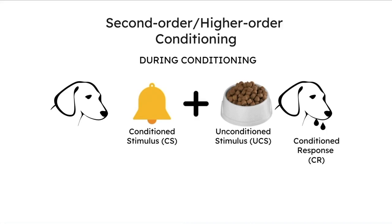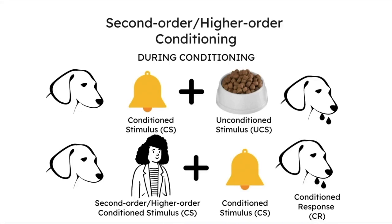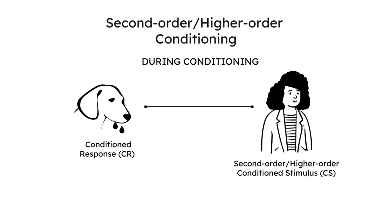Now, what if during the conditioning phase there was another neutral stimulus that preceded the sound of the bell? Imagine a situation where before every trial, Pavlov's research assistant walks into the lab, following which the bell rings, and then the meat powder is presented. Assuming these events occur repeatedly in brief succession, after a while the dog starts salivating — eliciting a conditioned response — only at the sound of the footsteps of the lab assistant alone.